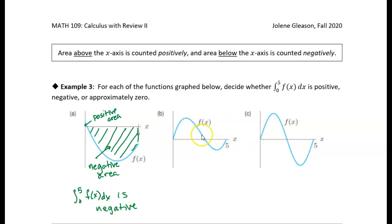So let's take a look at b. Now again, you can see we've got quite a bit of positive area. This is all positive area.